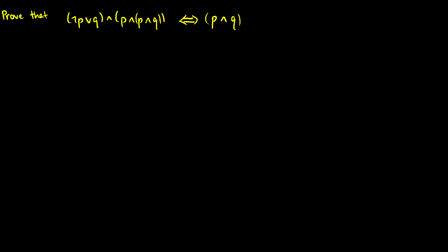Second question, let's prove that (NOT P or Q) and (P and P and Q) is the same thing as just P and Q. So we'll take one of these and reduce them to the other. So let's start off with this one.